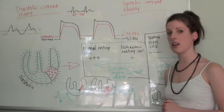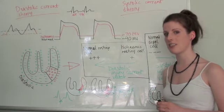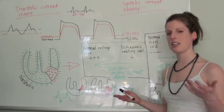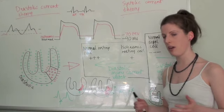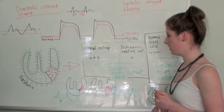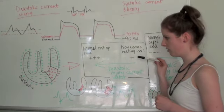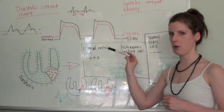So what happens when one area of myocardium is more positive than another is an electrical current is generated between the two areas, and the current or vector moves in the direction of the positive, the more positive area.